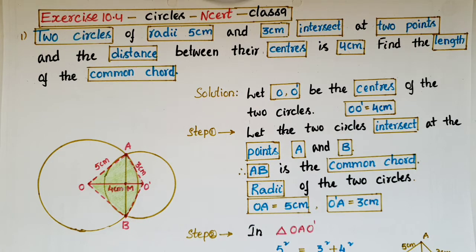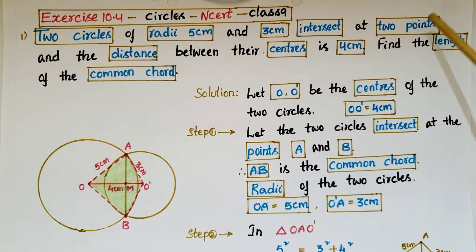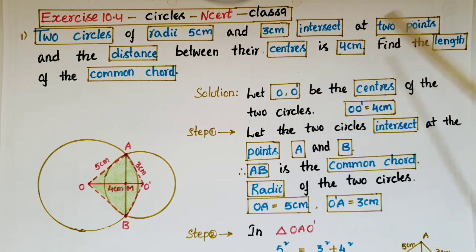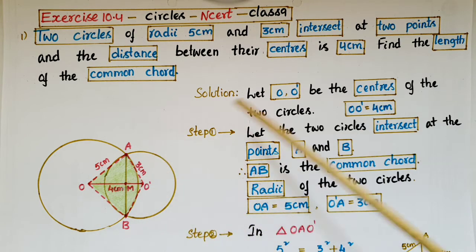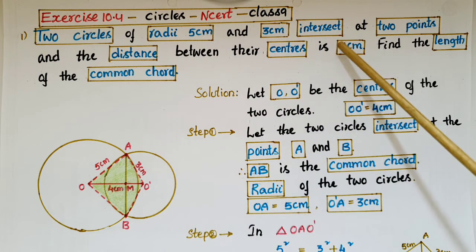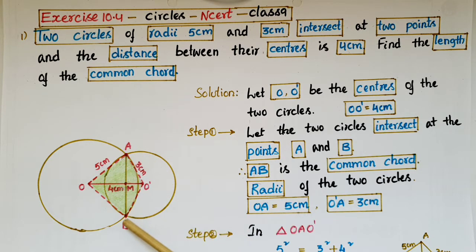Hello everyone, today I am going to tell the solution of the first problem from Exercise 10.4 from the Circles chapter from NCERT Class 9. Here the problem is: two circles of radius 5 centimeters and 3 centimeters intersect at two points and the distance between the centers is 4 centimeters. Find the length of the common chord. So here let O and O' be the centers of the two circles, and the distance between the centers is given as 4 centimeters. The two circles intersect at two points, so let these two points be A and B.